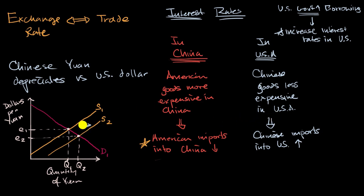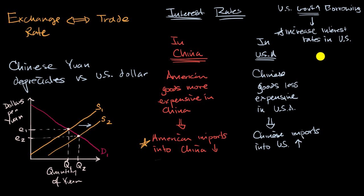We also considered a scenario where government borrowing and higher US interest rates change the demand curve. Dollar holders might prefer to save in the United States rather than converting to Yuan and saving in Chinese bank accounts. The big takeaway is that exchange rates and trade are very linked, and that things like government borrowing can affect interest rates, which can affect exchange rates, which can affect trade.